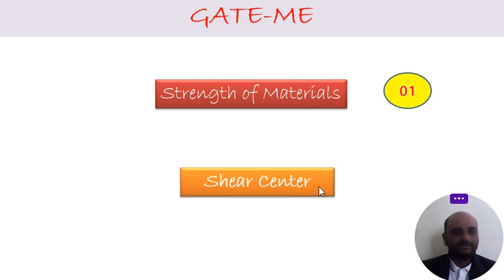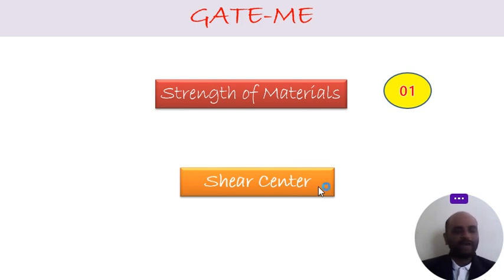Whenever you watch a truck, the chassis below is made up of C-sections. The key question is: where is the load applied on that C-section, and how far is it from the shear center? The shear center is the point where we apply the load so there will be no twisting — the beam only bends purely. Twisting is very dangerous because the part can fail easily, whereas bending is less severe and can sometimes add strength.